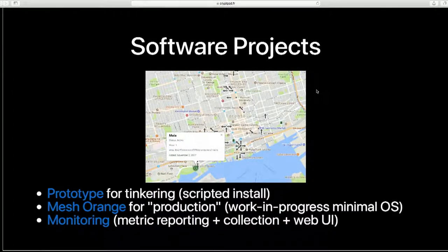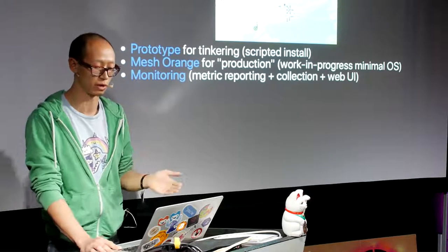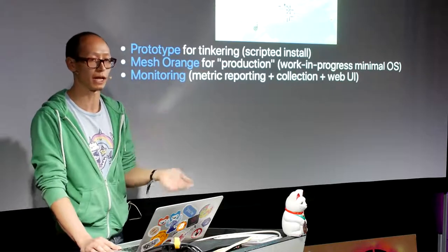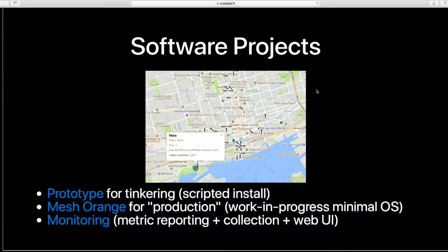We maintain three software projects. The prototype repository is mostly for tinkering — you flash Raspbian or Debian onto an SD card, run an installation script, it installs the mesh routing software, and also has scripts to install IPFS, making it easy to tinker with. The plan for something more production-ready is a minimal OS image that runs on single board computers, which we named Mesh Orange — still a work in progress. Lastly, we're building a suite of monitoring software with a web UI, hoping to show physical locations of nodes plus real-time information, with each node doing metric reporting that anyone can run collection software on.